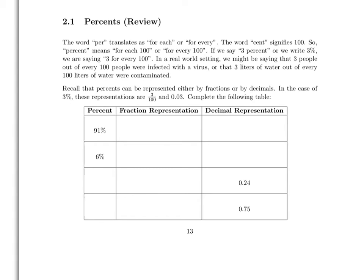Let's go ahead and complete the following table. 91% - that translates as 91 out of 100 or, written as a fraction, 91 one-hundredths. 91 hundredths, written as a decimal, is 0.91.